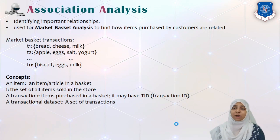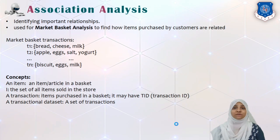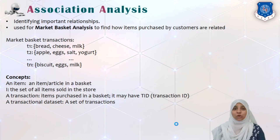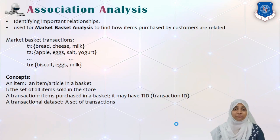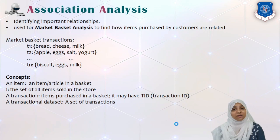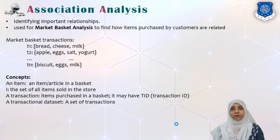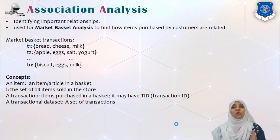Here we make use of market basket analysis in order to find out frequent item sets — which items are purchased by customers very repeatedly or frequently, and along with some frequent items, what are other items which are frequently purchased together. For a market basket transaction, we are given input as a set of transactions, where each transaction has a set of items purchased together, a transaction ID, and together these form the transactional data set.